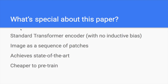Using transformer to process image is a more challenging thing to do. The transformer takes a sequence of tokens as input — like a sentence, a list of words. Fitting an image into a transformer is a real problem. This paper uses an interesting way to decompose an image into a sequence of patches, achieves state-of-the-art results in multiple benchmarks, and is cheaper to pre-train compared to other models.